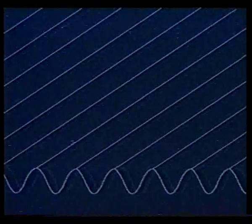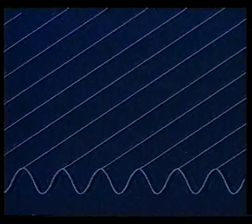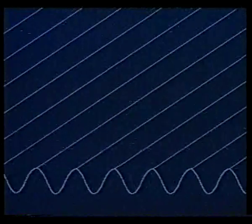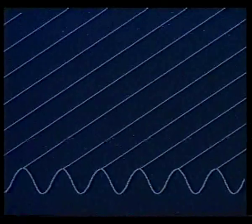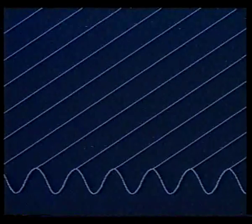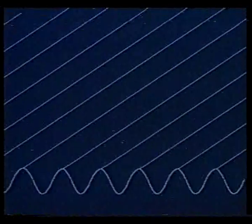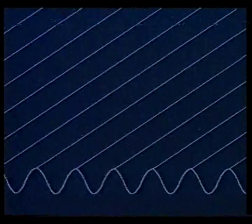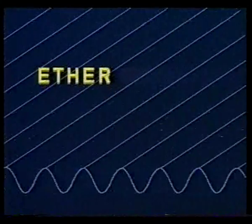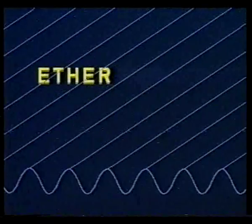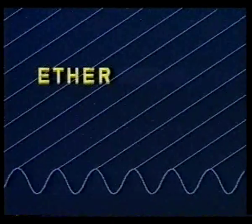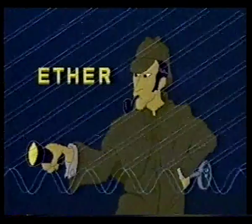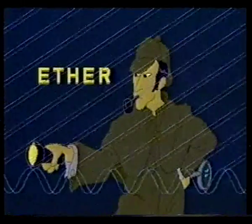The wave model explained many behaviors of light, but it was far from perfect. For example, no one had been able to prove the existence of the mysterious invisible ether, the medium which filled the air and space around us, and was apparently necessary to convey light waves.